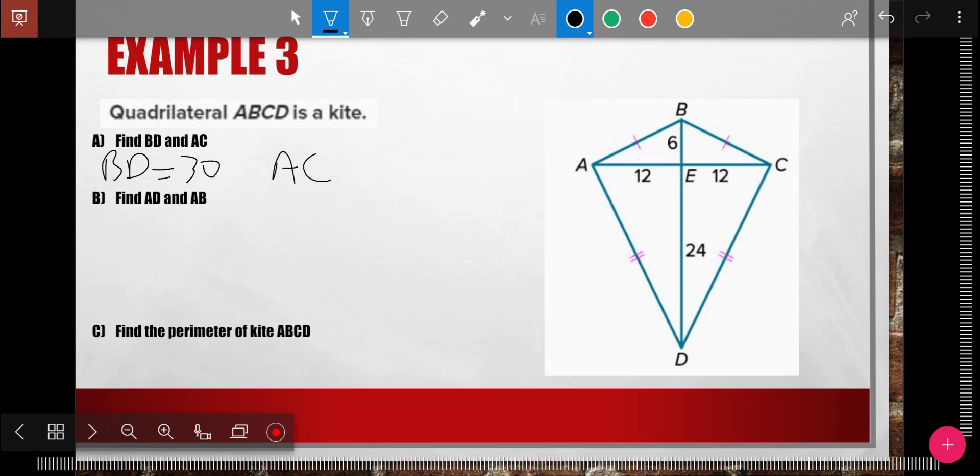AC, AE is 12. EC is 12. And so the whole thing is 24.